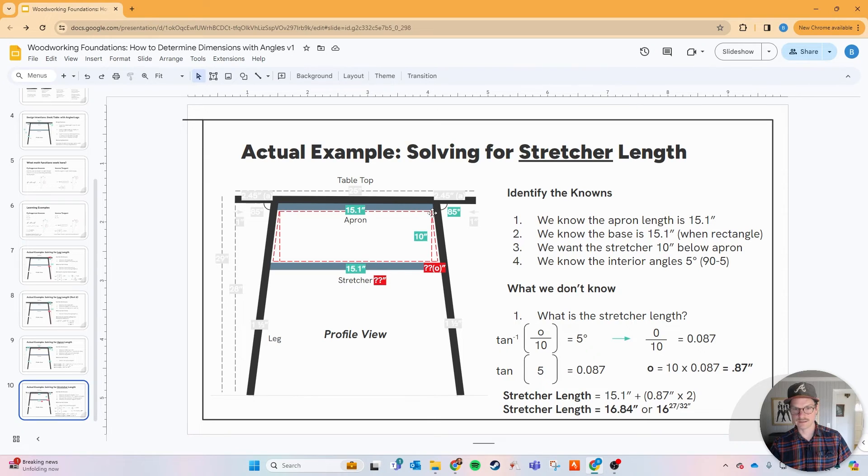So what is the stretcher length? We know 5 degrees is this little area right here. We need to work backwards. We don't know the opposite of this little triangle here, but we do know the adjacent which is 10 right here. If we do tangent of 5, that equals 0.087. So we solve for o. That is 10 times 0.87 which equals 0.87 of an inch. What you do is now you have that little dimension here from both sides. So you add the stretcher length which is 15.1, I'm sorry the apron length, and then you add the two ends of those triangles. So 0.87 times 2. That stretcher length is going to be 16.84 or 16 and 27/32nds inches. That's how you solve getting all the dimensions exact for your cut list.